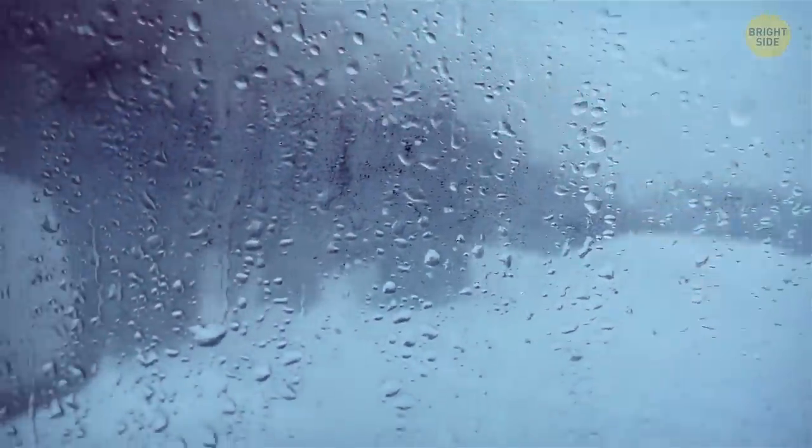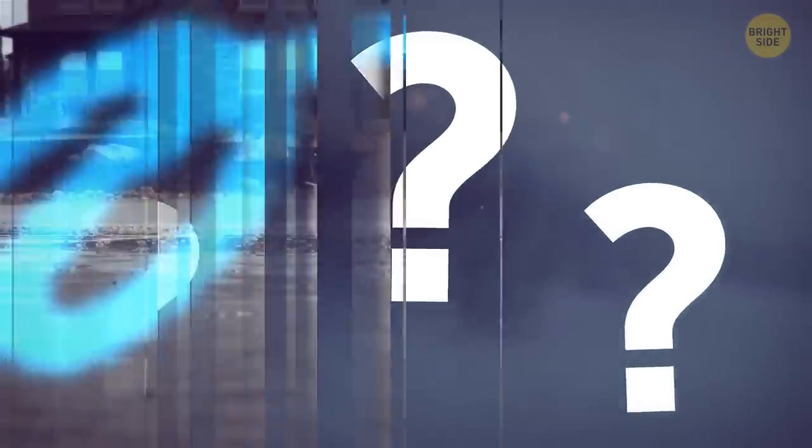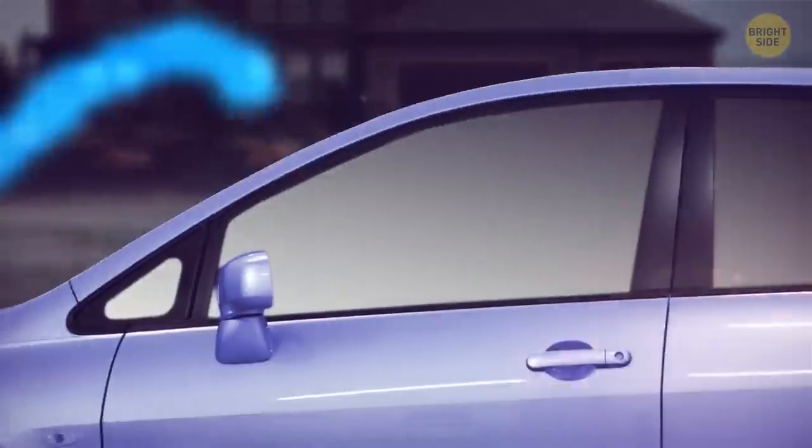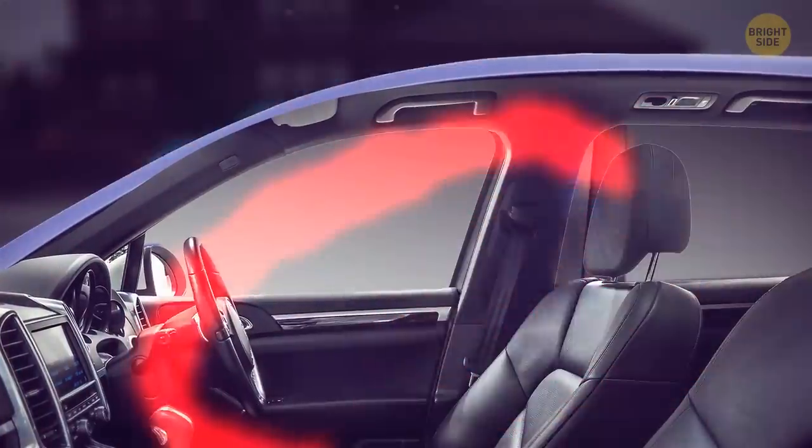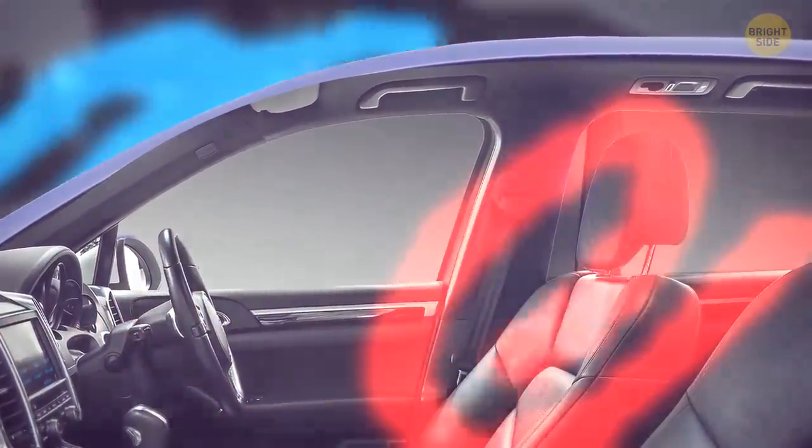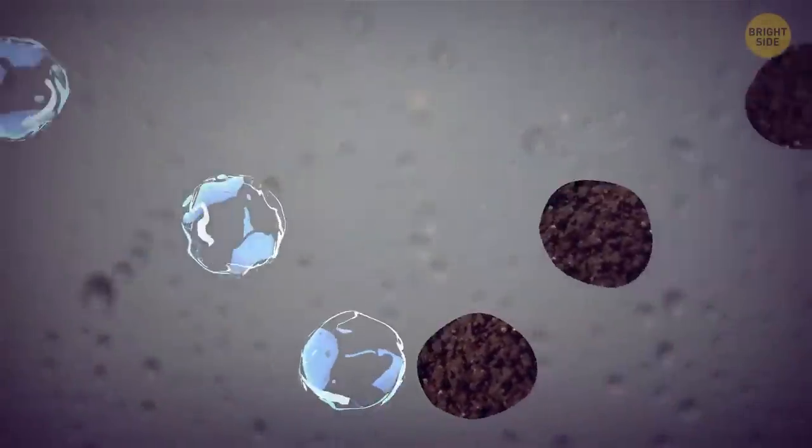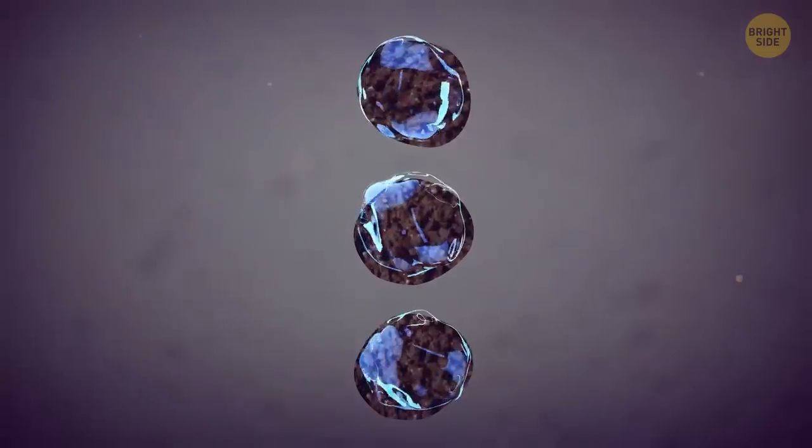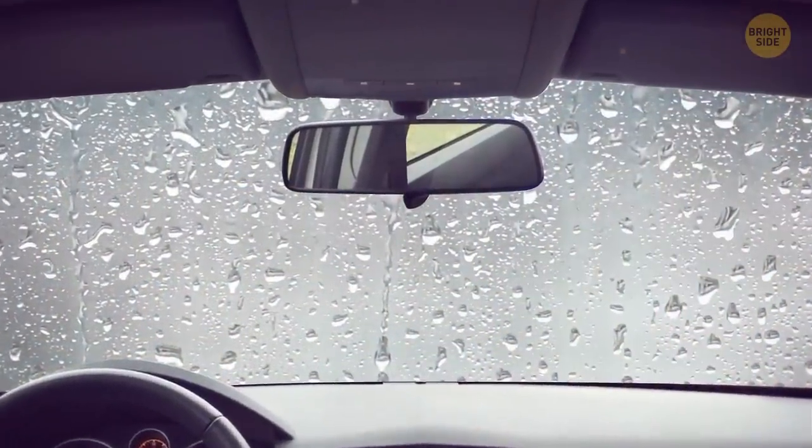A foggy windshield inside the car is easy to avoid. But before you find out how to fix it, do you know why it occurs? The mixture of warm and cool temperatures moving between your car's interior and exterior is the main cause. A dirty windshield makes it much worse. The dirt particles attract moisture as the temperature changes.